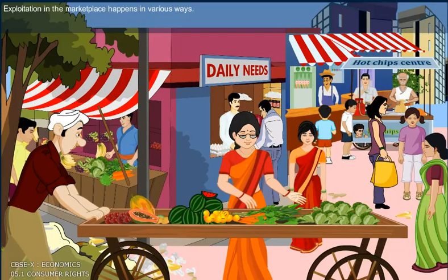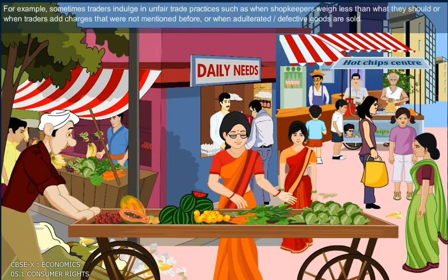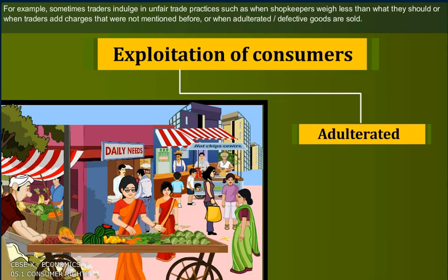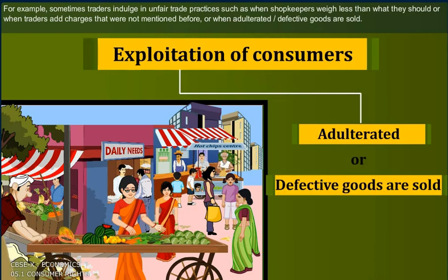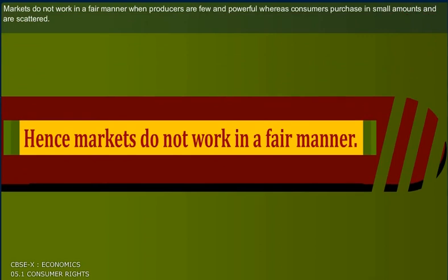Exploitation in the marketplace happens in various ways. For example, sometimes traders indulge in unfair trade practices such as when shopkeepers weigh less than what they should, or when traders add charges that were not mentioned before, or when adulterated or defective goods are sold. Markets do not work in a fair manner when producers are few and powerful whereas consumers purchase in small amounts and are scattered.